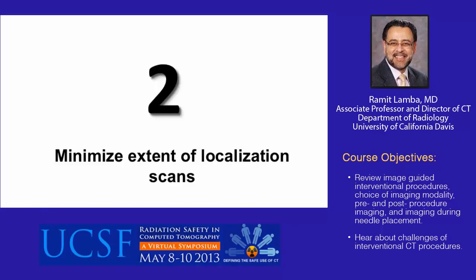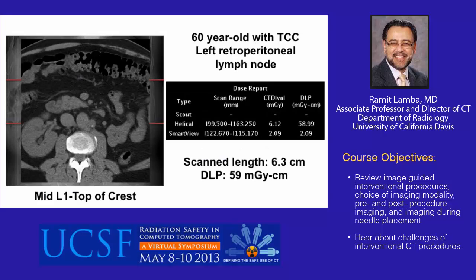The next, and in my opinion the biggest, opportunity for dose reduction is to minimize the extent of the localizing scan. This is a 60-year-old male with transitional cell carcinoma of the urinary bladder. CT images show a 7 mm left para-aortic lymph node that was new from the prior exam. A careful review localized this node to the L2-3 disk space, and we determined a limited scan from the middle of L1 to the top of the iliac crest would suffice. The scan length was only 6.3 cm, and combined with low-dose acquisition resulted in a DLP of only 59 for the localizing scan.